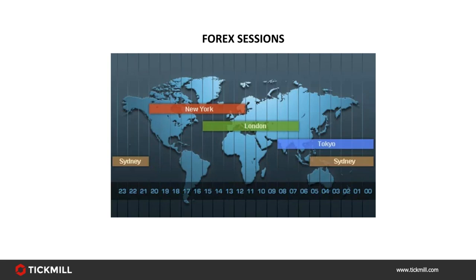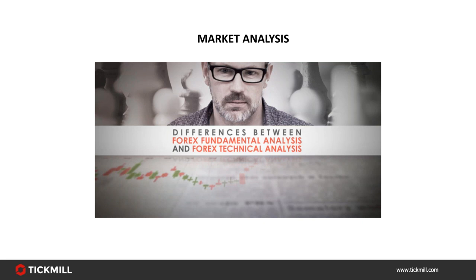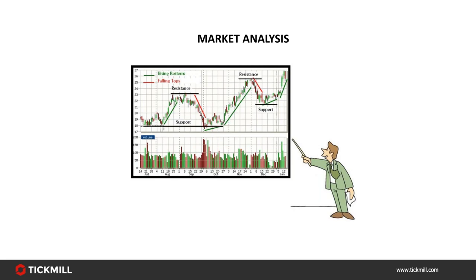Now we'll briefly introduce the two types of core analysis used to identify trades. Technical analysis — sometimes split into technical and price action — is the concept of looking at current and previous price movements to determine where a currency is going. This is done on charts. It's relatively quick and presents a good overview. The idea is to use previous price movements to predict future ones. When many analysts study the same chart using the same tools, price predictions can almost become self-fulfilling prophecies — more so in forex markets than in individual equities.